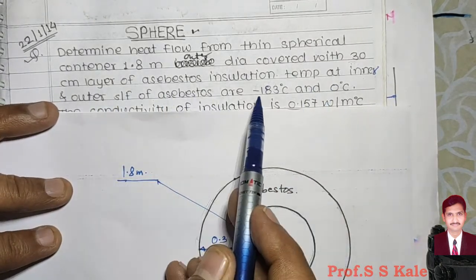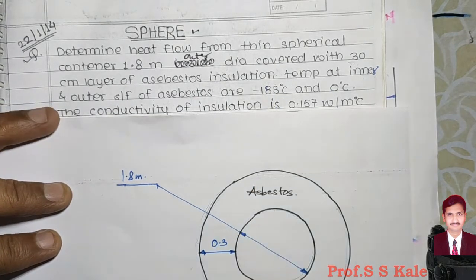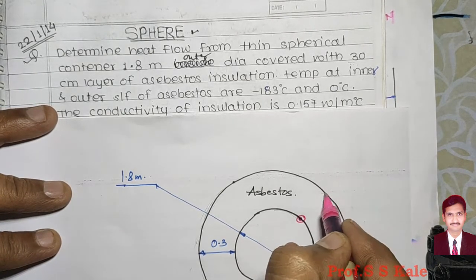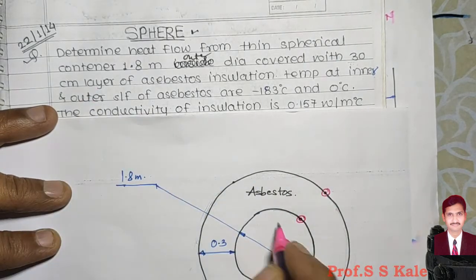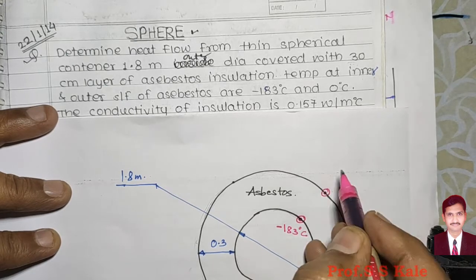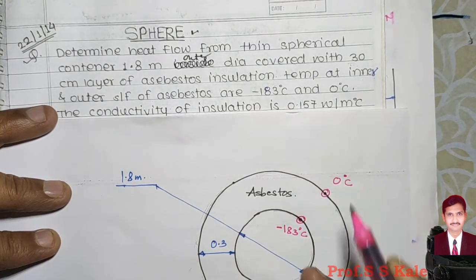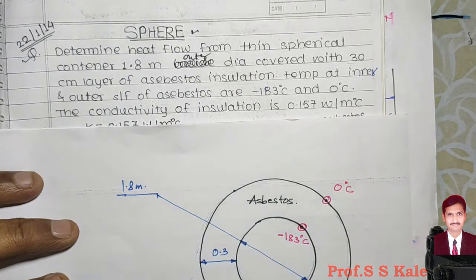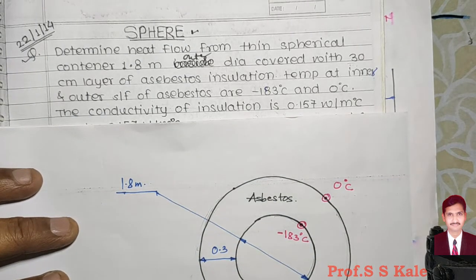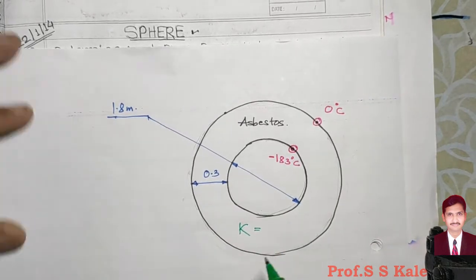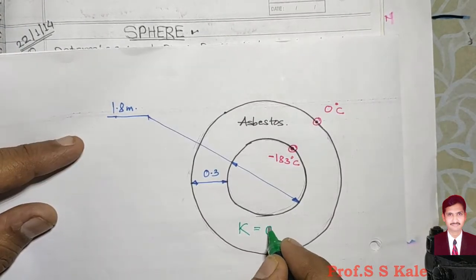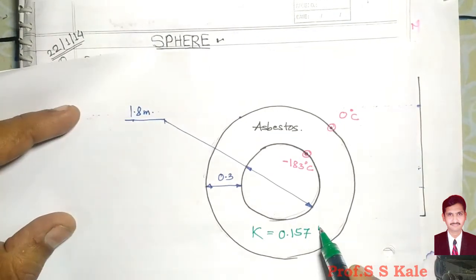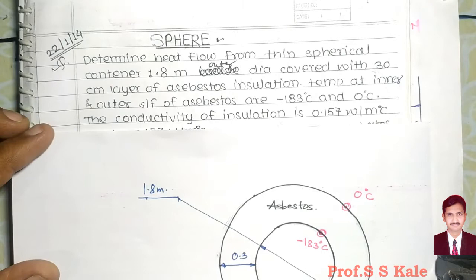The temperatures at the inner and outer surface of asbestos are minus 183 and 0 degrees Celsius respectively. The inner surface temperature is minus 183°C and outer surface temperature is 0°C. The thermal conductivity k for asbestos is given as 0.157 watt per meter kelvin.